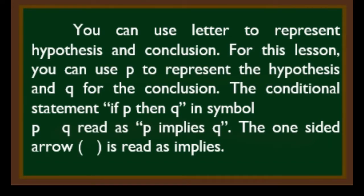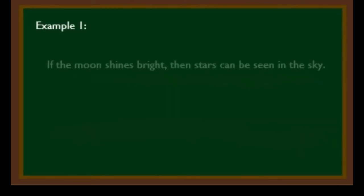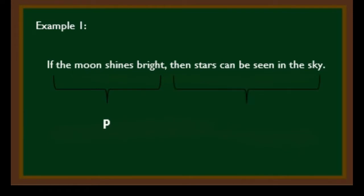The conditional statement 'if P, then Q,' written in symbol as P implies Q — the one-sided arrow is read as 'implies.' For example: if the moon shines bright, then stars can be seen in the sky. The first statement is the hypothesis or P, and the second statement is the conclusion or Q. This is an example of a conditional statement — a statement written in the form if P, then Q, where P is the hypothesis and Q is the conclusion.